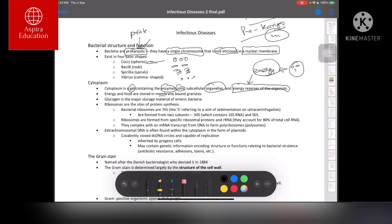Energy and food are present in membrane-bound organelles. Glycogen is the major storage material for enteric bacteria. I've specifically mentioned this because it has appeared in mock tests or actual MRCP exams.